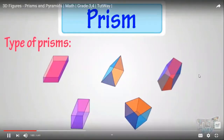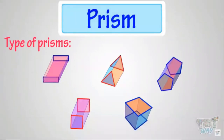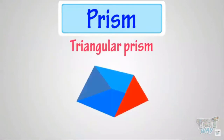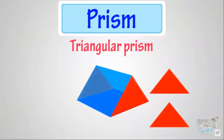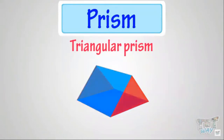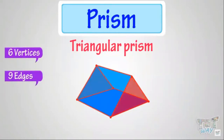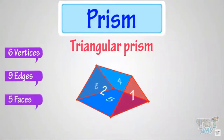There are many types of prisms depending upon the shape of their top and bottom faces, or their cross-section. The first one is the triangular prism. This is a triangular prism because its top and bottom faces are triangular in shape and all other faces are rectangular. It has six vertices, nine edges, and five faces.